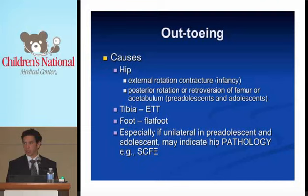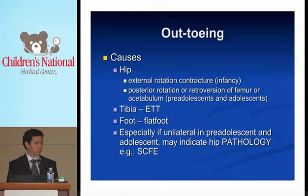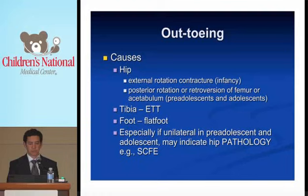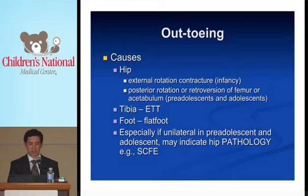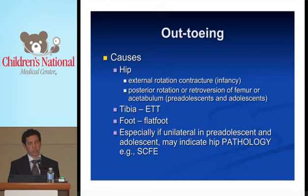Out-toeing: in infancy, the cause is external rotation contracture at the hip. It can also come from posterior rotation or retroversion of the femur or acetabulum. If it's coming from the tibia — external tibial torsion — or from the foot: hyperpronation is that collapse of the arch and the ankle inward, which tends to roll the foot outward. A flexible flat foot can do that. As long as the foot is flexible, it's okay — flat foot is normal. An important take-home point: if out-toeing is unilateral, especially in a pre-adolescent or adolescent, it may indicate hip pathology. If there's an associated limp, think slipped capital femoral epiphysis, even if the child is not complaining of hip pain.